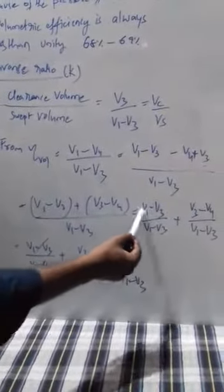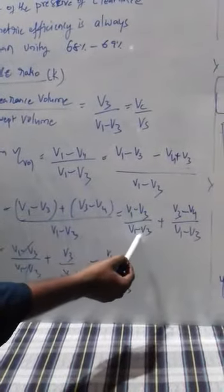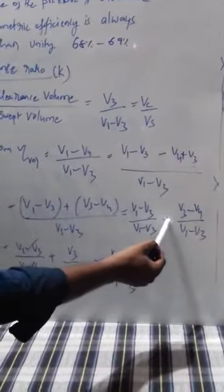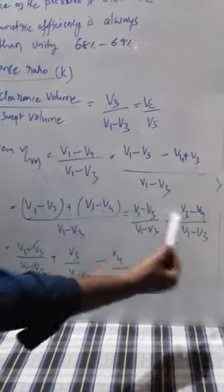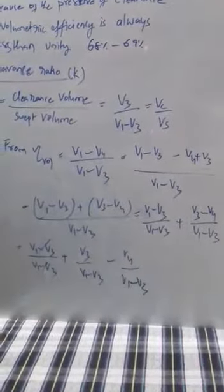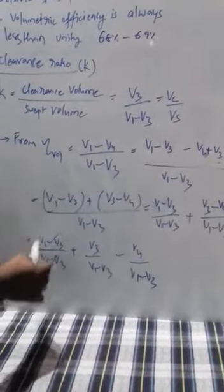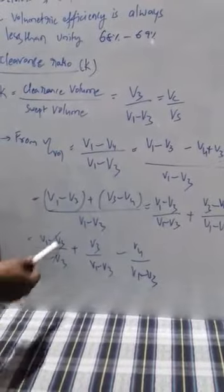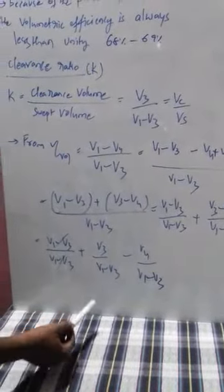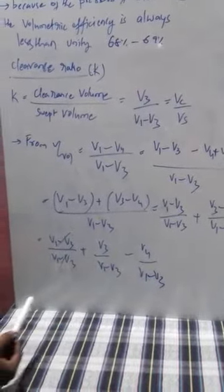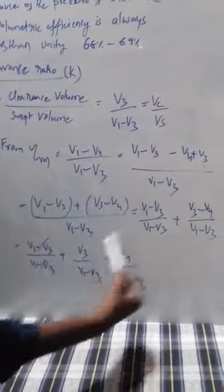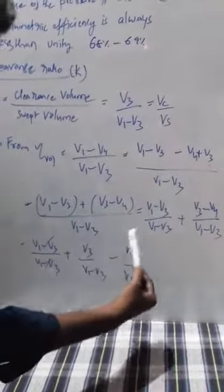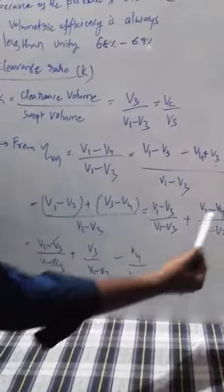Write (V1 minus V3) by (V1 minus V3) plus (V3 minus V4) by (V1 minus V3). These two like terms get cancelled, leaving us with V3 by (V1 minus V3) minus V4 by (V1 minus V3).